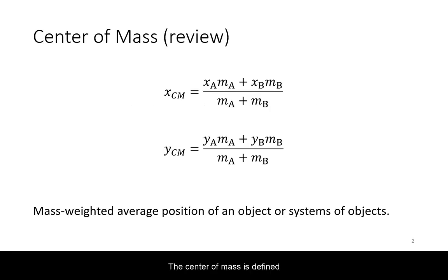The center of mass is defined as the mass-weighted average position of a system of objects. It is a vector and hence can only be defined with respect to a declared coordinate system. Note there can be more than two objects that make up a system.